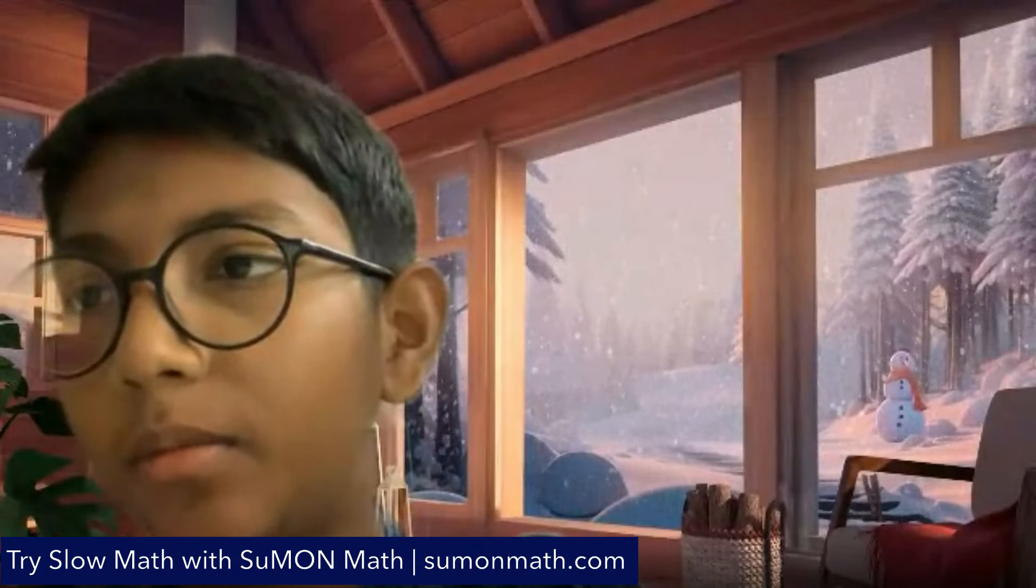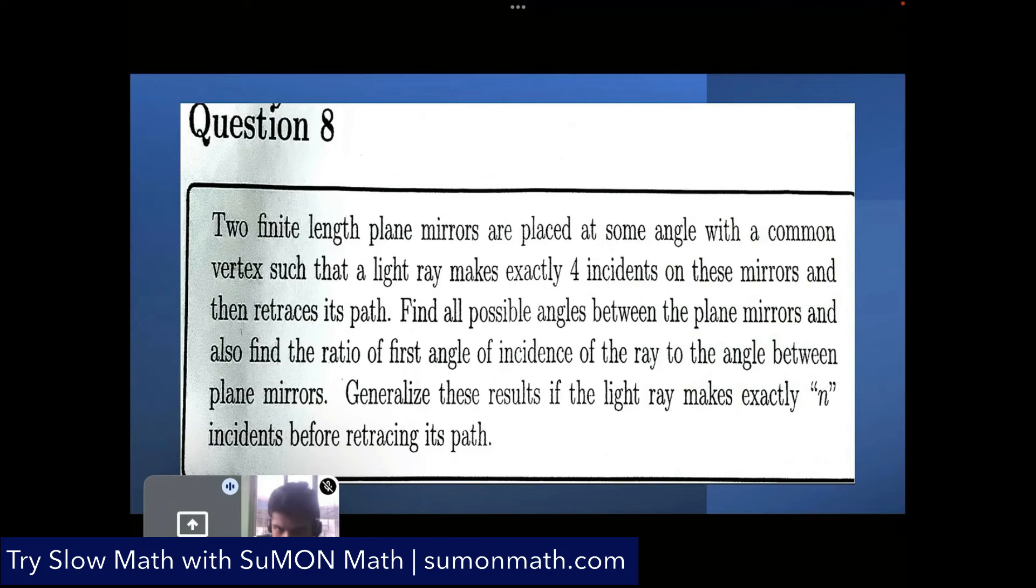Krishiv, which fortnight problem you are going to present? I'll be presenting level 3, fortnight 3, problem 8. Problem 8 states that we have two finite length plane mirrors placed at some angle with a common vertex such that a light ray makes exactly four incidents on these mirrors and then retraces its path. So two mirrors are placed adjacent to each other. They have a common vertex and there's some angle between them.